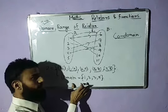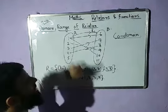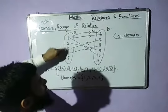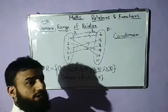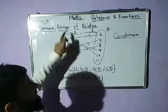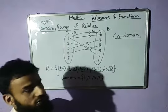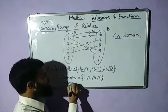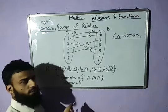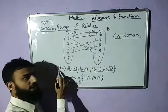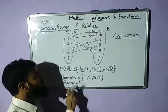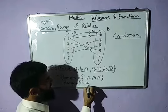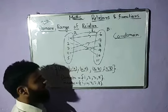To simplify: the domain is the set of all used elements from set A — the elements that are actually related to something in set B. So domain = {1, 2, 3, 4}. The range is similar but for second entries: it is the set of all second entries in the ordered pairs of the relation.